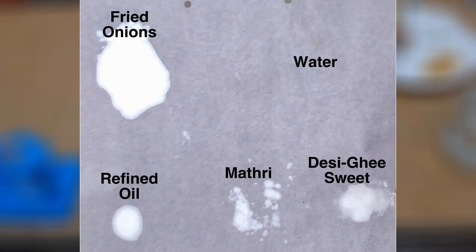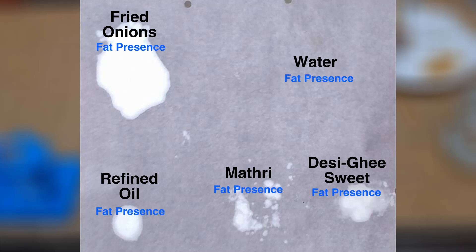When you hold this piece of paper against a light, the stains become translucent — not transparent, but translucent. In the case of water, there is no stain and no translucent patch. The ones which have a stain, that translucent patch, have fat presence; whereas water has no stain and no fat presence.